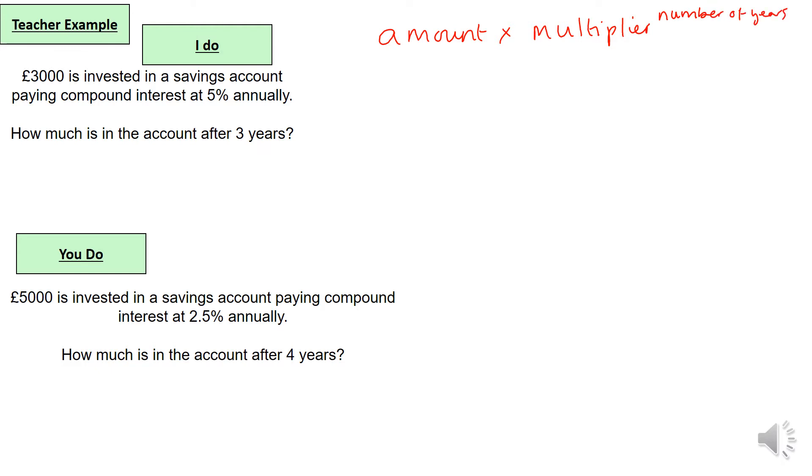So in this case, three thousand pounds is invested in a savings account paying compound interest at five percent annually. How much is in the account after three years? Annually just means per year, or you might see the word per annum.